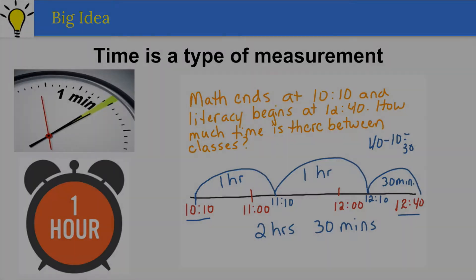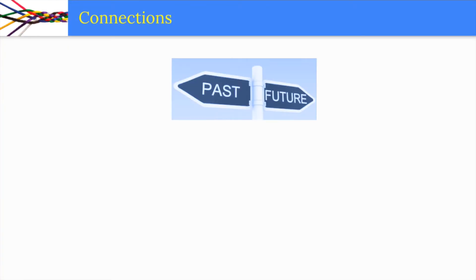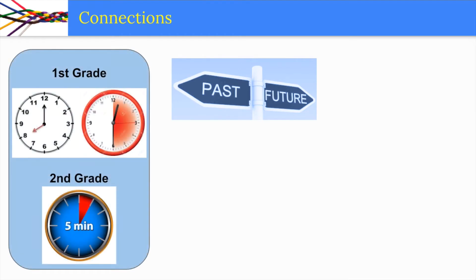It is important that students make connections between math that they have already learned and math they are going to learn. In first and second grade, students learn how to measure time to the hour, half hour, and five minutes.